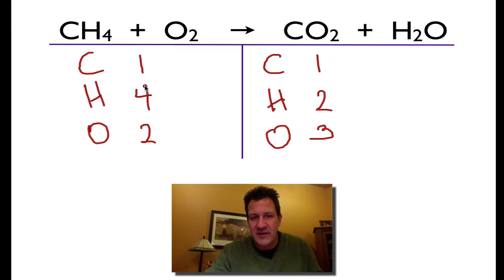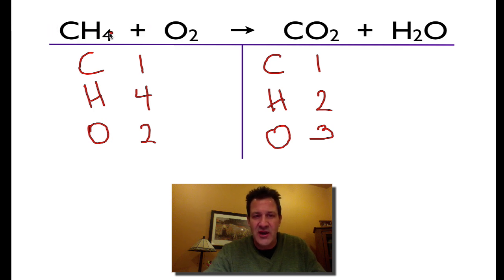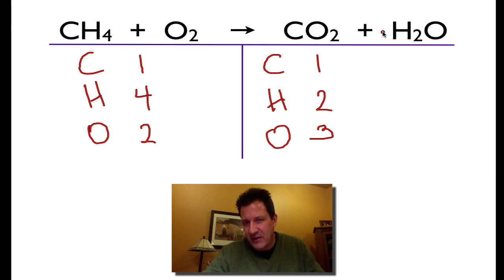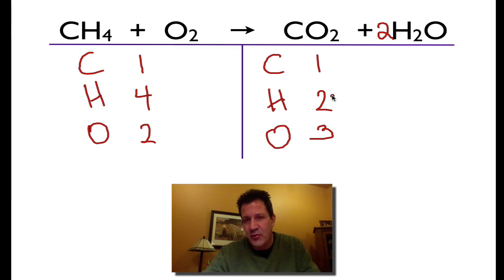Going to the top of the table, my carbons are balanced. The next element — my hydrogens are not balanced, so I have to balance them. The only way I can balance any element is by adding whole numbers to the fronts of the chemical formulas. I cannot change the subscripts, and I cannot put numbers between the elements — I can only put whole numbers in front of the formulas. I need two more hydrogens on the right, so I put a coefficient of two in front of water. Now I have four hydrogens and four oxygens on the right.